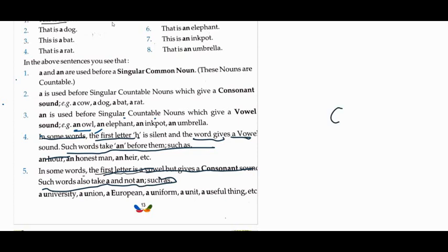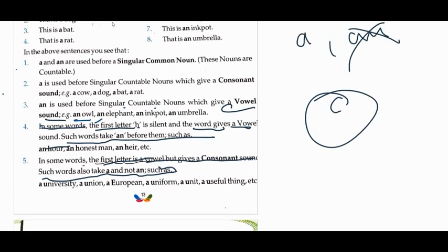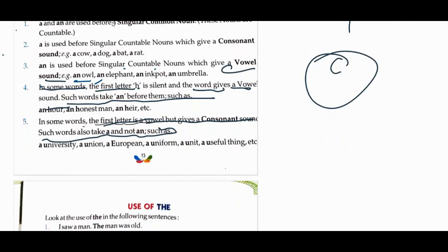First letter is vowel but consonant sound. It depends on 'a' or 'an' - if consonant sound, then we will use 'a' instead of 'an'. Like a university, a union, a uniform, a unit.